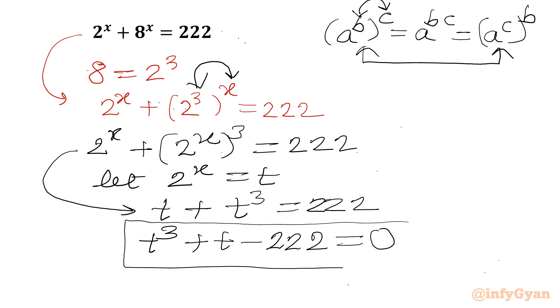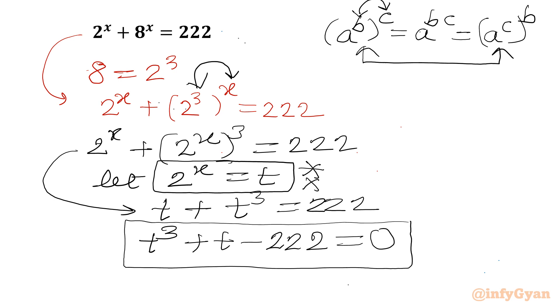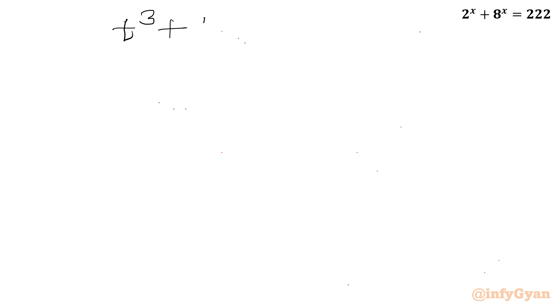Or I can write t³ + t − 222 = 0. This is a cubic equation. We will find the values of t and then find x from 2^x = t. Let's solve this cubic first.